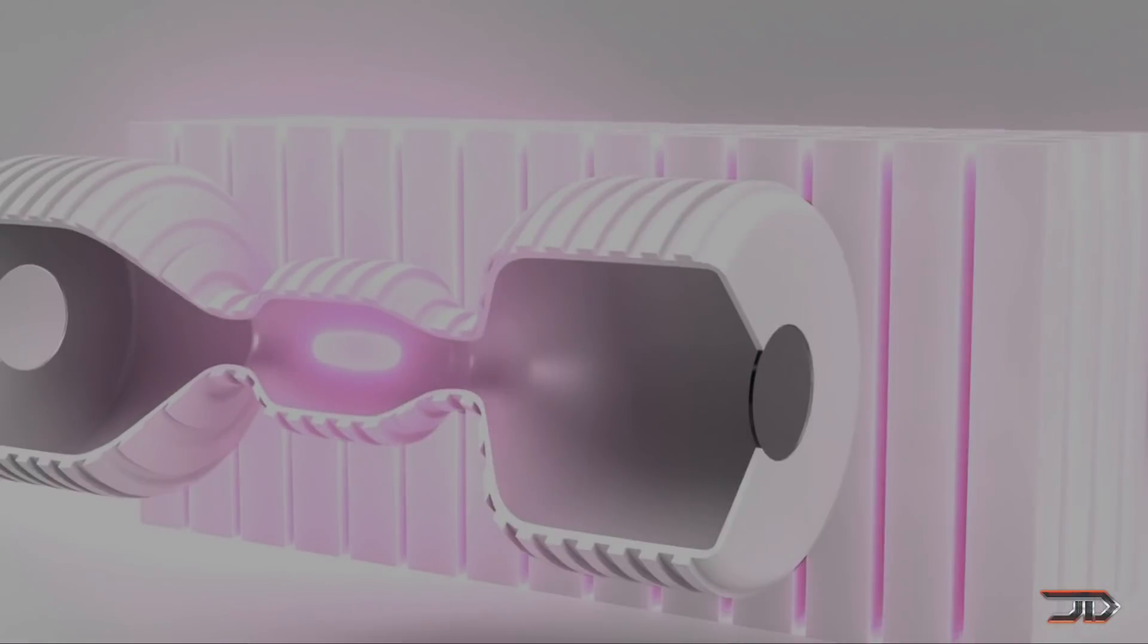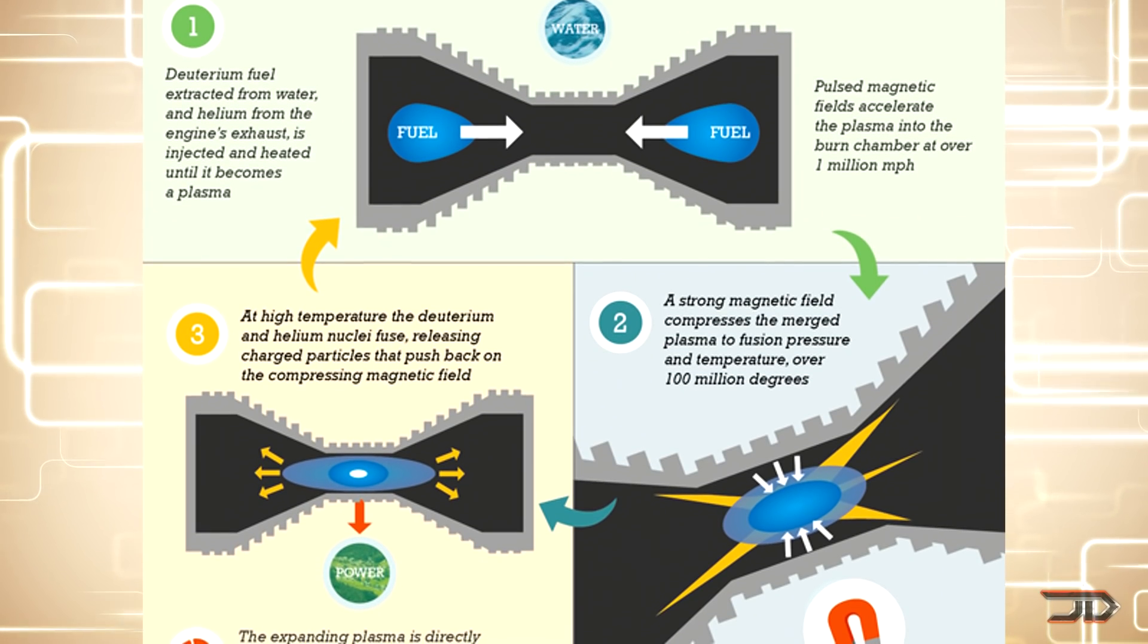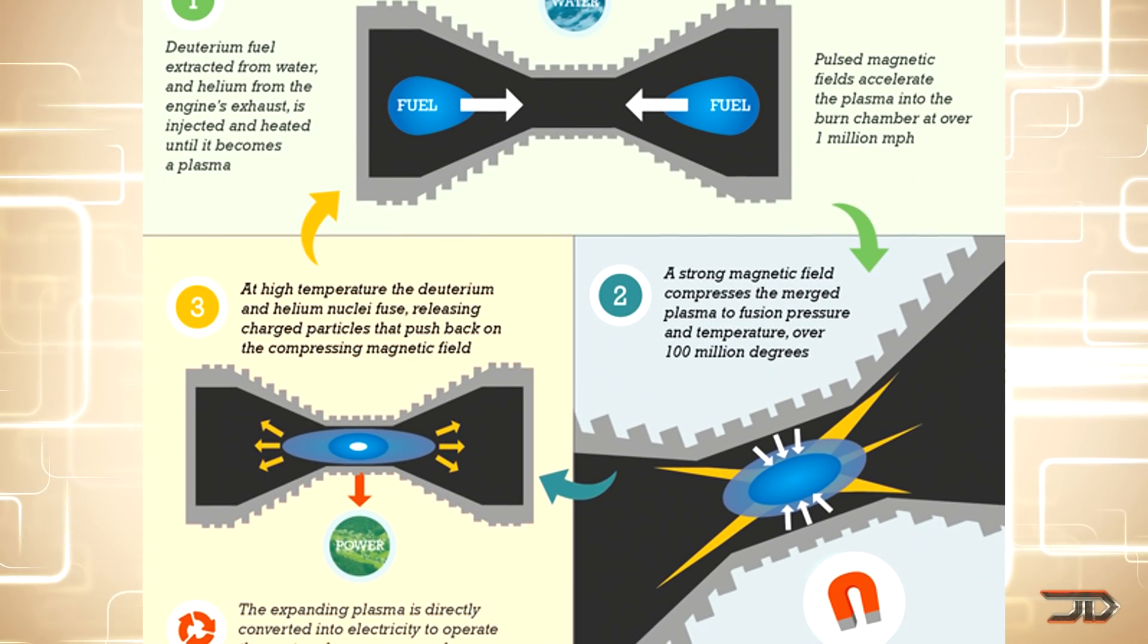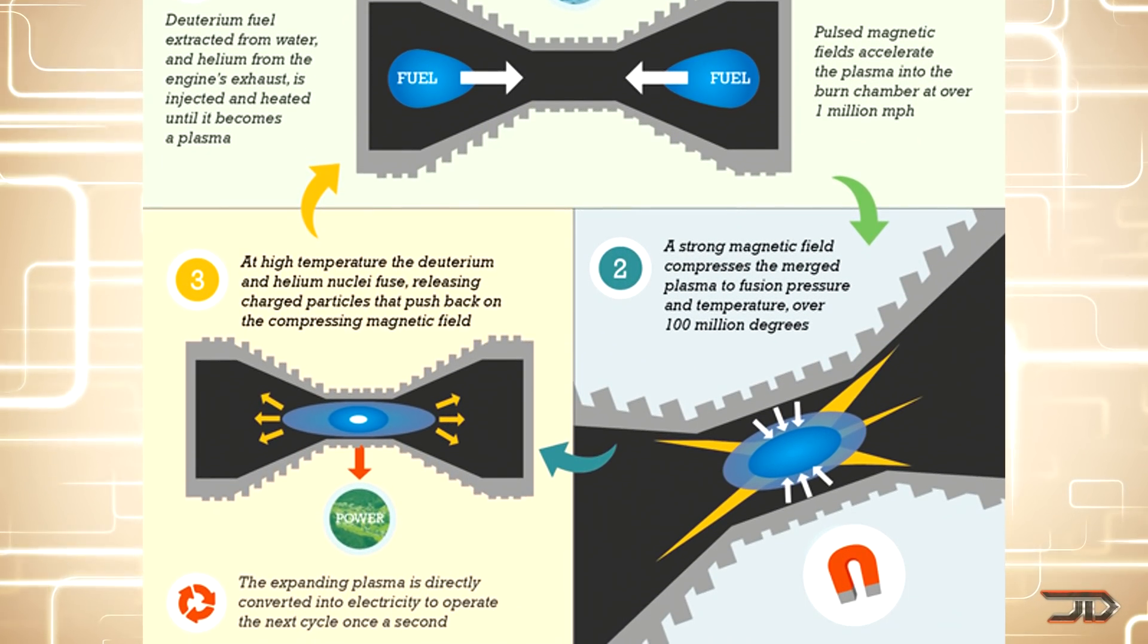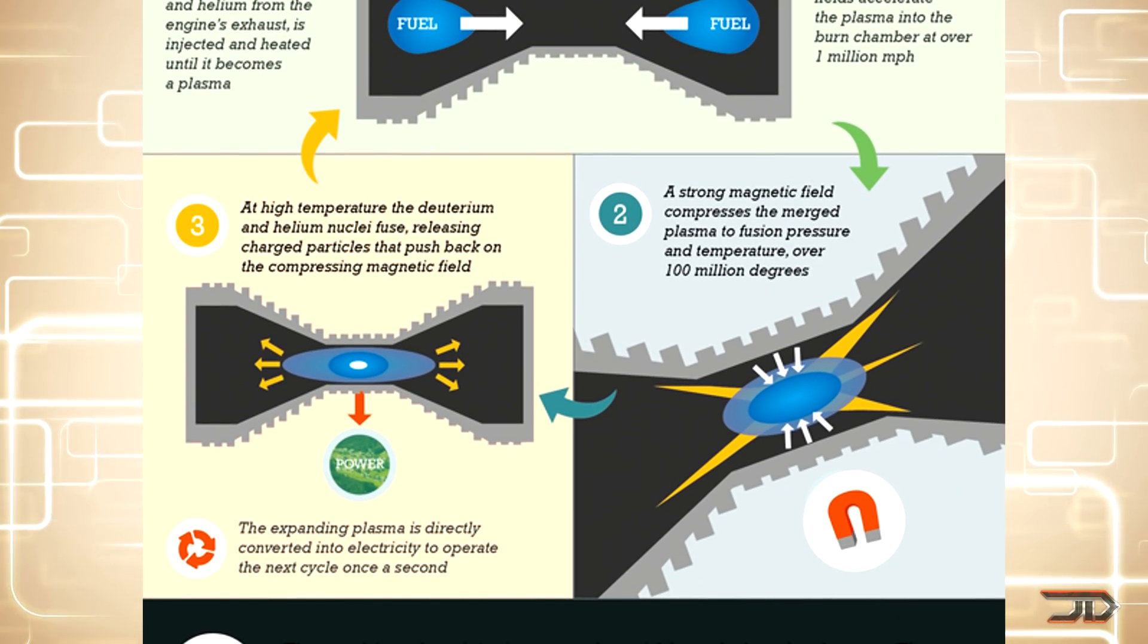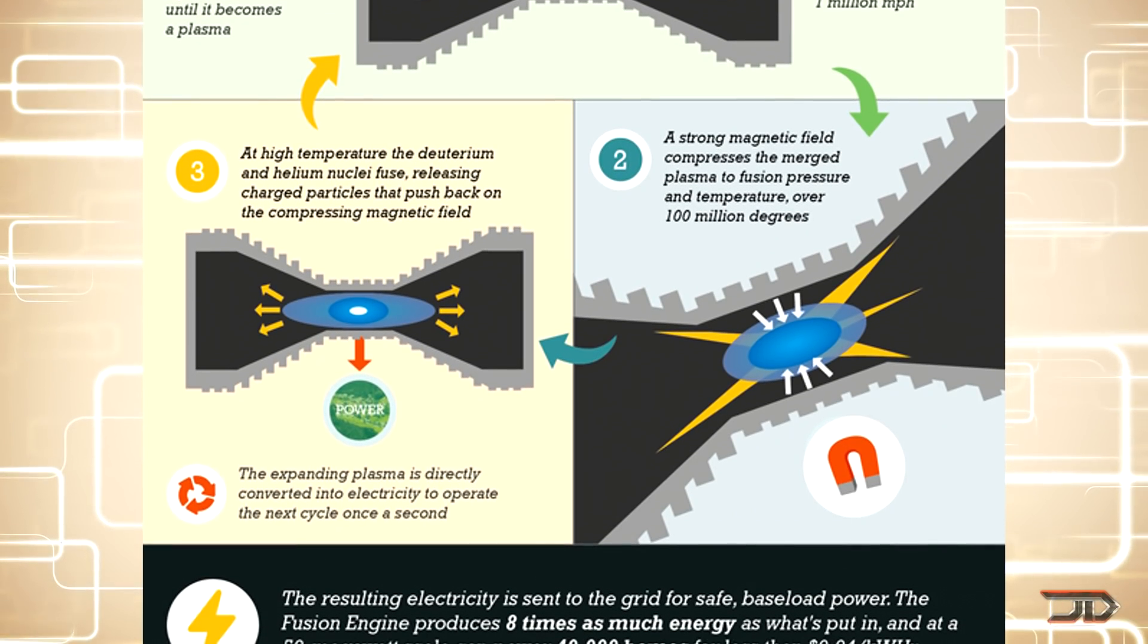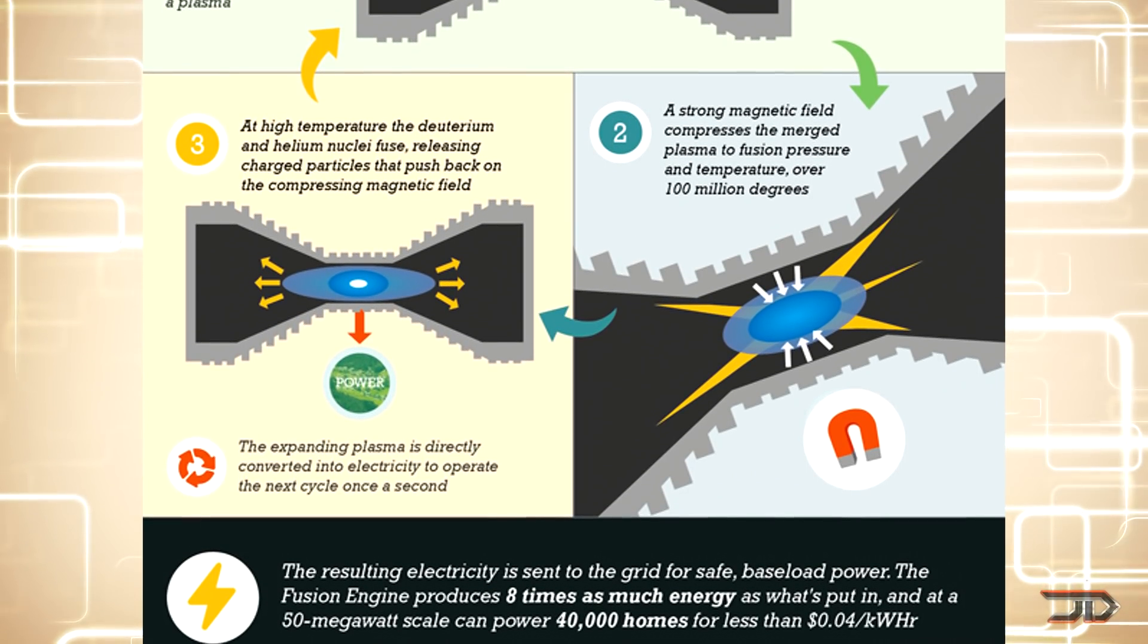The company should have the reactor running by 2024, but it is worth noting that it's not going to be supplying power to the grid anytime soon. I guess what you can take from this is that we should know if reversed field configuration can actually be a feasible reactor in the future. And I think that answer is going to come within the next five years.